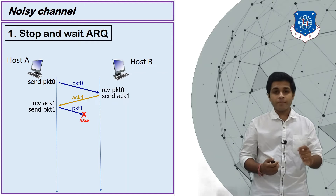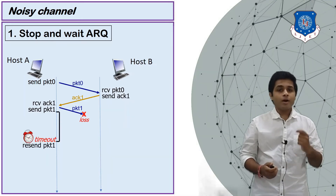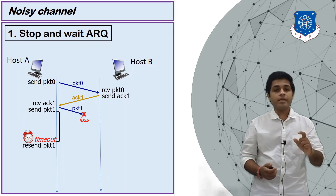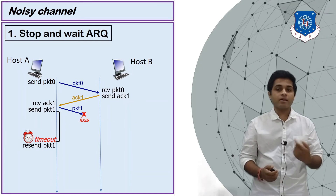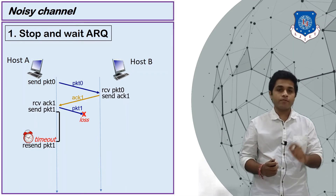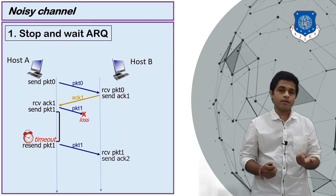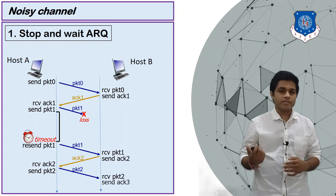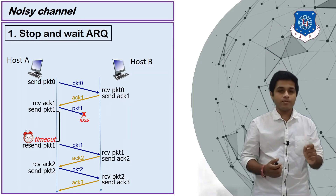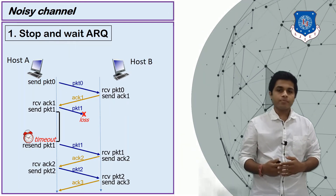To solve this, A uses a timer called the timeout. After sending any packet, the sender waits for a fixed amount of time. For example, A waits 5 seconds after sending packet 1. If ACK 2 is not received within 5 seconds, A sends packet 1 again. B receives packet 1, sends ACK 2, A receives ACK 2 and knows packet 1 was received, so it sends packet 2. B receives packet 2 and sends ACK 3. The infinite waiting problem is solved using Automatic Repeat Request.